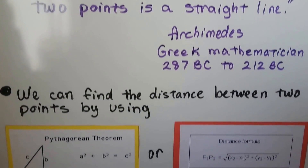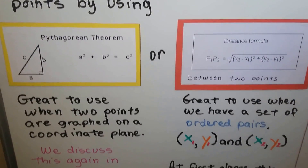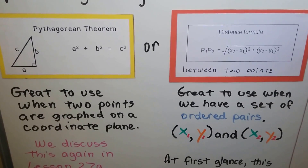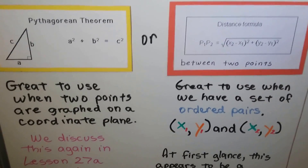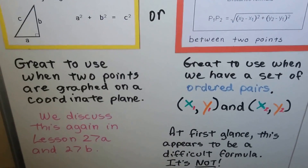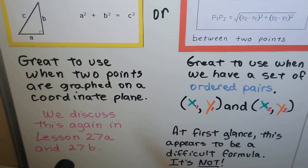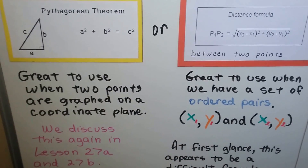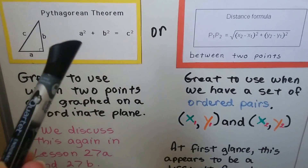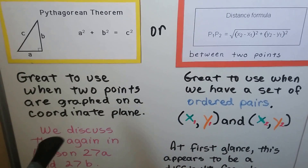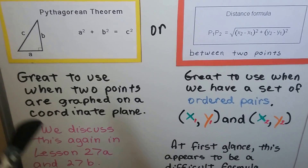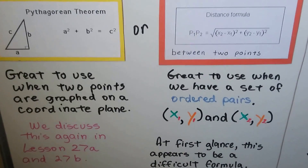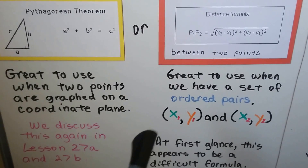We can find the distance between two points by either using the Pythagorean Theorem or the distance formula. The textbook wants us to hone in on the distance formula, but I'm including the Pythagorean Theorem in this lesson — it's actually discussed in Lesson 27a. We're only at 22e, so we're going to talk about this again, but I needed to include it now.